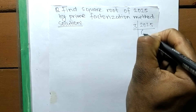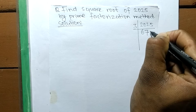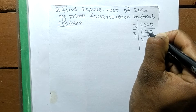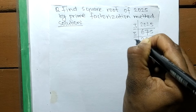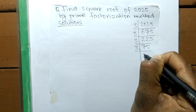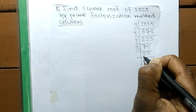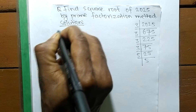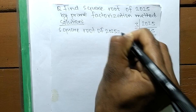Dividing 2025 by 3: 3 times 6 is 18, remaining is 225. 3 times 7 is 21, remaining is 15. 3 times 5 is 15. Again dividing by 3: 3 times 5 is 15. Then 5 times 5 is 25. So we have found the prime factors of 2025.